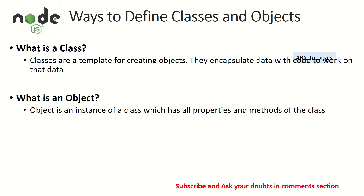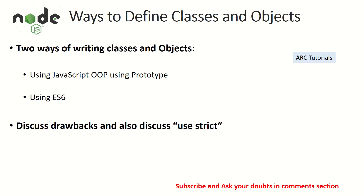Let's talk about what a class and an object are — a quick recap even for experienced developers. A class is a template for creating objects; it encapsulates data with code to work on that data. A class has properties and methods defined, and we use that template to create objects. An object is an instance of the class — so if I create a class, I can create multiple instances, and those instances are called objects.